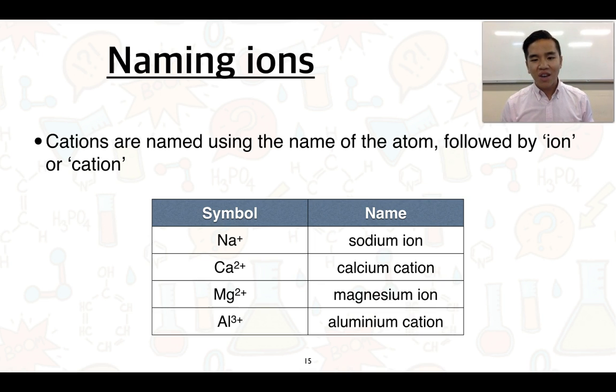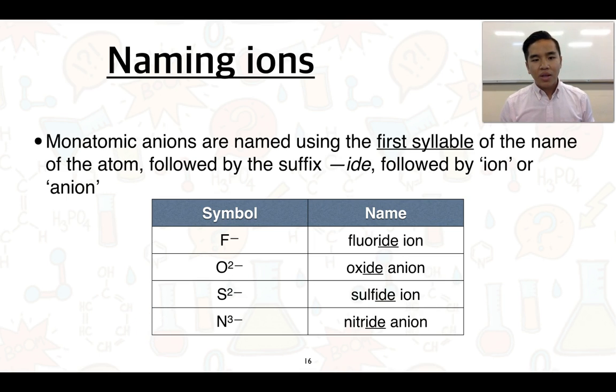If we want to name ions, just name the atom followed by the word ion or cation. If we look at anions, you take the first syllable of the name of the element or atom and then follow it by the suffix -ide, and then end that in ion or anion. We've got various examples here that show you how we name the ions, and I've underlined the fact that we end it in the suffix -ide.